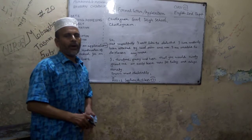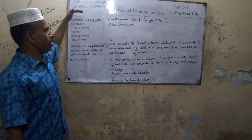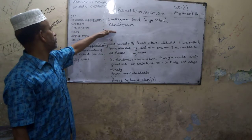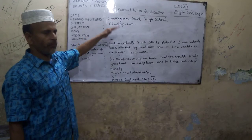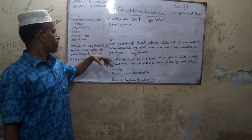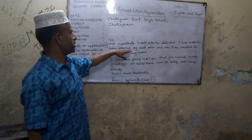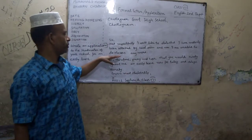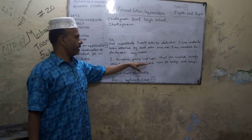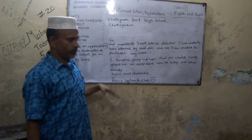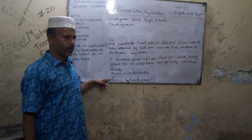Now I am again repeating the steps. First, you have to write today's date. Then comes the heading or addressing. Then comes the subject — we have written it. Then comes the salutation. Then the body: 'Most respectfully, I would like to say that I have suddenly been attacked by a head pain and now I am unable to attend classes. I therefore pray and hope that you kindly grant me leave for today and oblige thereby.' Then comes the subscription — most respectfully — and this X means the signature of the writer.